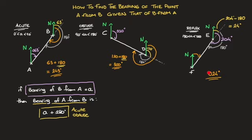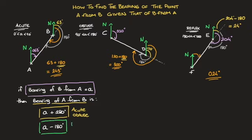Remember, we always write bearings with three digits, which is why we write 024. This third example shows that when the initial bearing is a reflex angle, rather than adding 180 degrees, we subtract 180 degrees. The second formula is: if the bearing of B from A equals angle A (reflex), then the bearing of A from B equals A minus 180. These formulas will always work and are really useful when working with bearings.